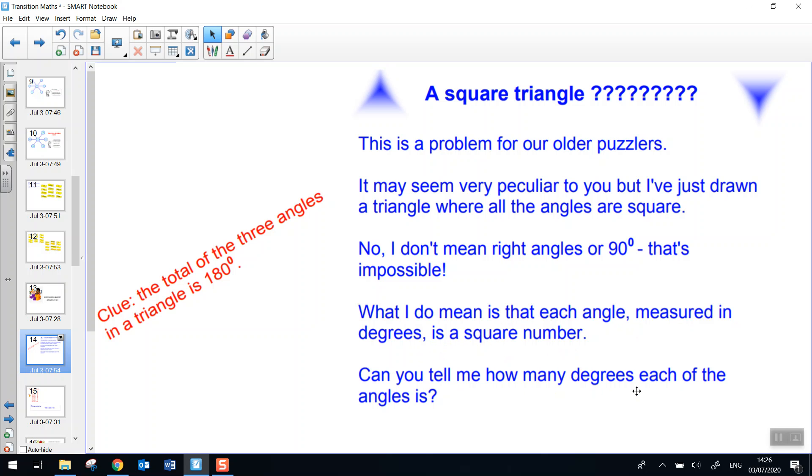What I do mean is that each angle measured in degrees is a square number. Can you tell me how many degrees each of the angles is? I'm giving you a clue here. There are three angles in a triangle. When you add them together, they come to 180 degrees. So the total of the three angles in a triangle is 180 degrees.